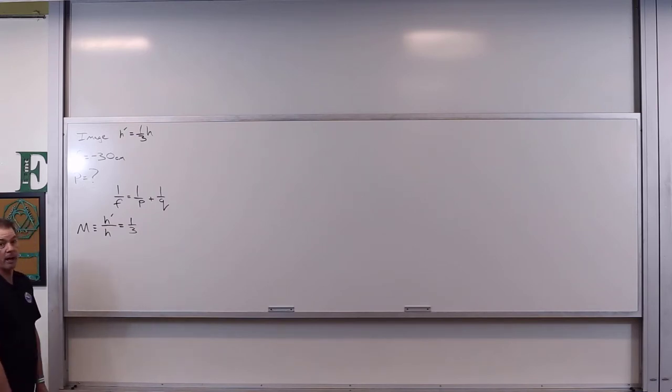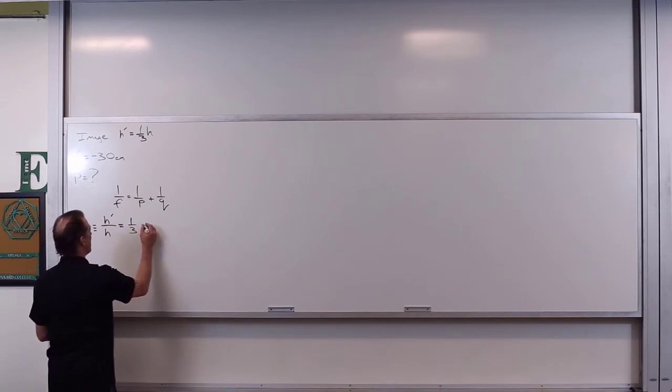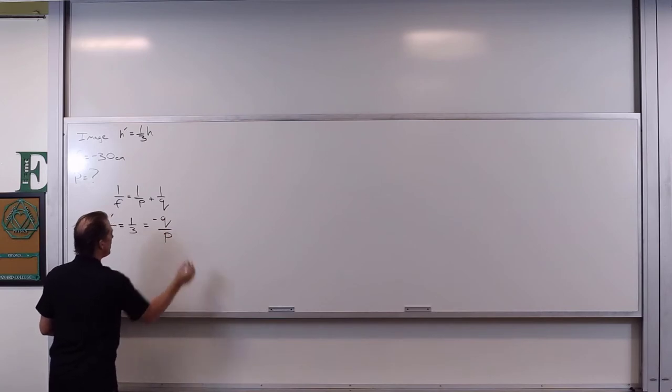Because this is a singular diverging lens. It's going to produce an upright image no matter what. So this has to be positive here. What's this going to be equal to? Negative q over p.